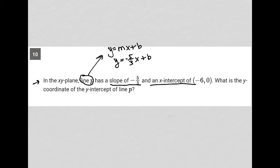Then it says, and an x-intercept of negative six-zero. So that means when x is negative six, y is zero. Let's see what I can figure out from that.